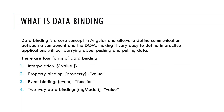What is data binding? Data binding is the core concept in Angular and allows us to define the communication between components and the DOM. There are four forms of data binding: interpolation, property binding, event binding, and two-way data binding.